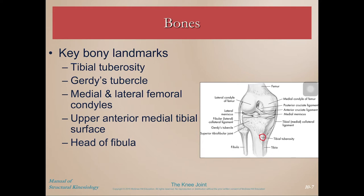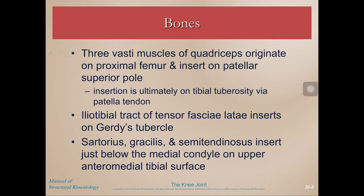Some important bony landmarks of the knee include the tibial tuberosity, where the patellar tendon inserts; Gerdy's tubercle, which is just superior and lateral to that; the medial and lateral femoral condyles; the upper anterior medial tibial surface, which is opposite Gerdy's tubercle; and the head of the fibula. You should be able to palpate these on your own knee and on somebody else's knee as well.